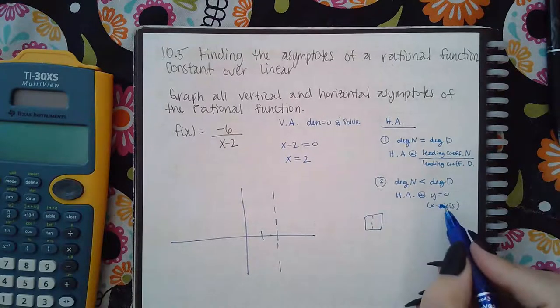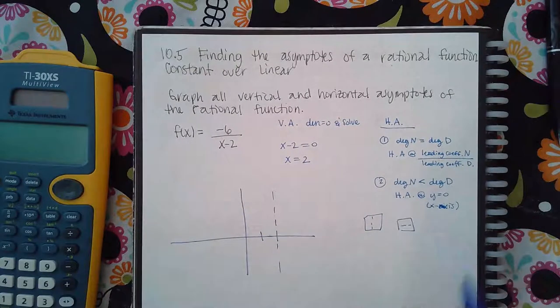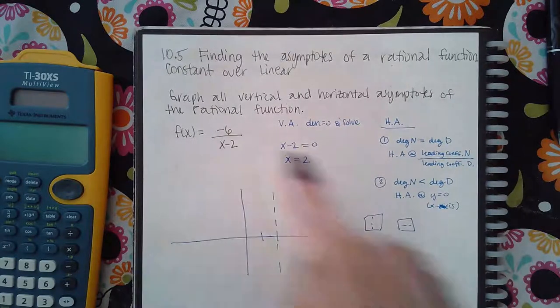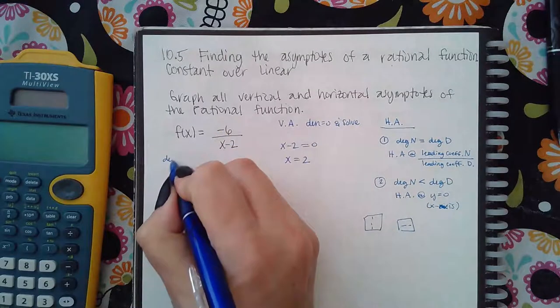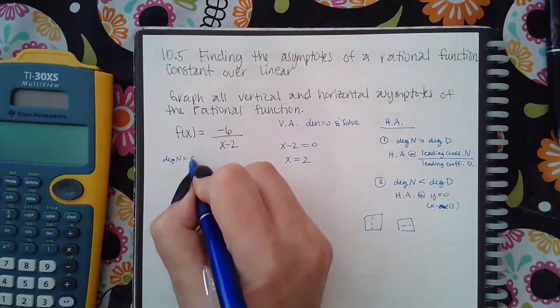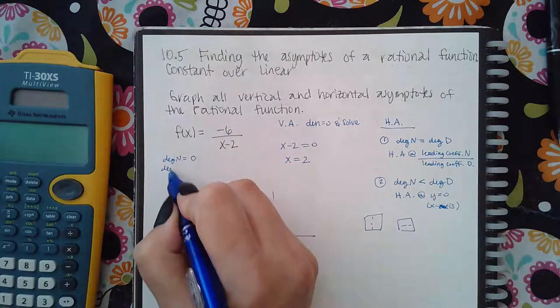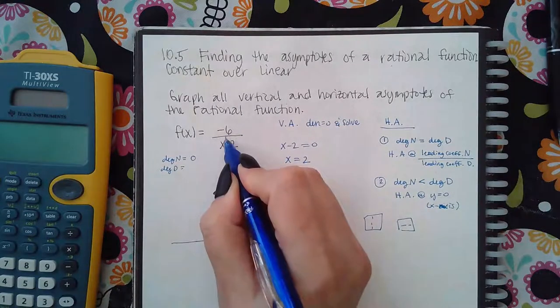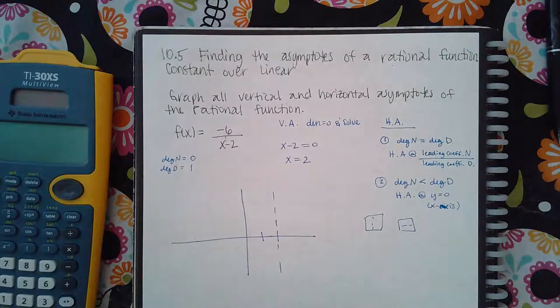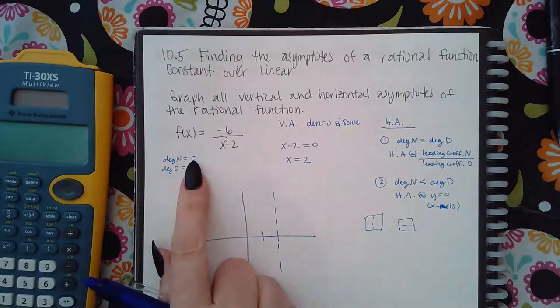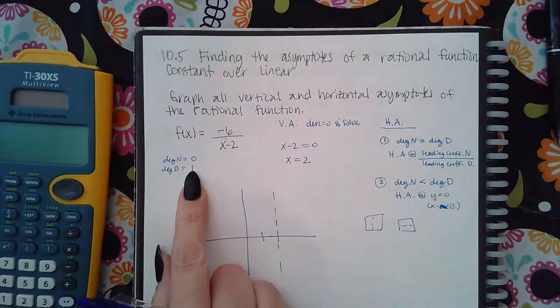For the horizontal asymptote, you're going to click on the button that goes this way. And here, what is the degree? The degree of my numerator is actually zero because there's no x's up there. The degree of the denominator is one because I do have an x and the exponent is one. So the degree of my numerator is less than the degree of my denominator.